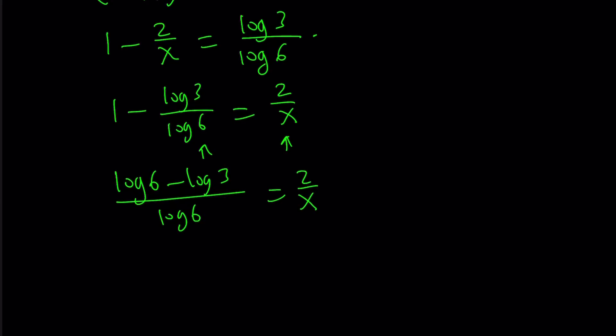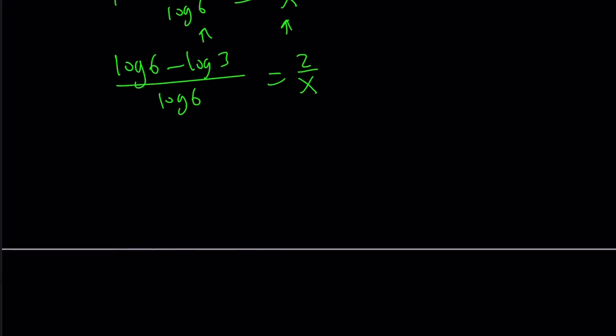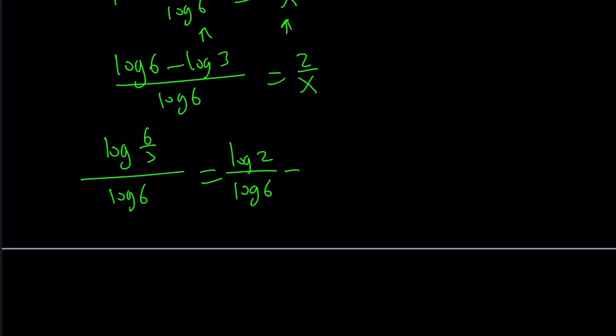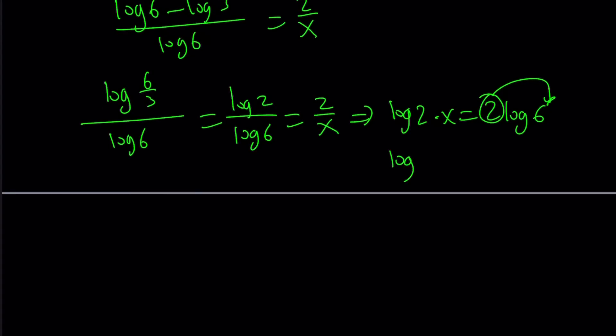Now log 6 minus log 3 from properties of logs can be written as log 6 over 3 which is log 2. So this becomes log 2 over log 6 and that's equal to 2 over x. And then from this point on we can go ahead and flip both sides or cross multiply. Either way is fine. So log 2 times x equals 2 log 6. And now 2 can be moved because that's going to become a power. And we get log 2 times x equals log 6 squared which is log 36. And then finally dividing by log 2 we get x by itself log 36 over log 2.